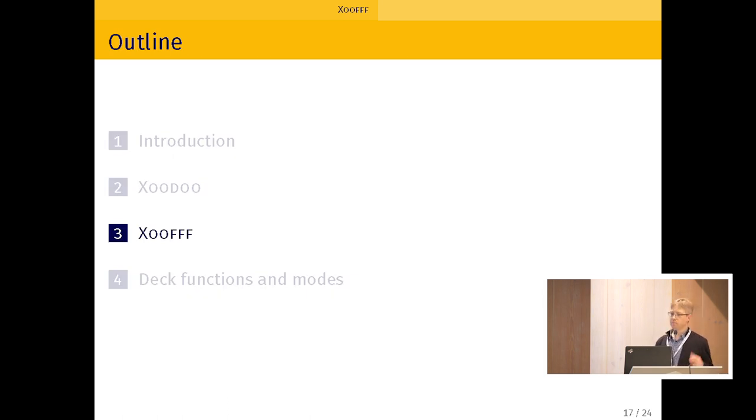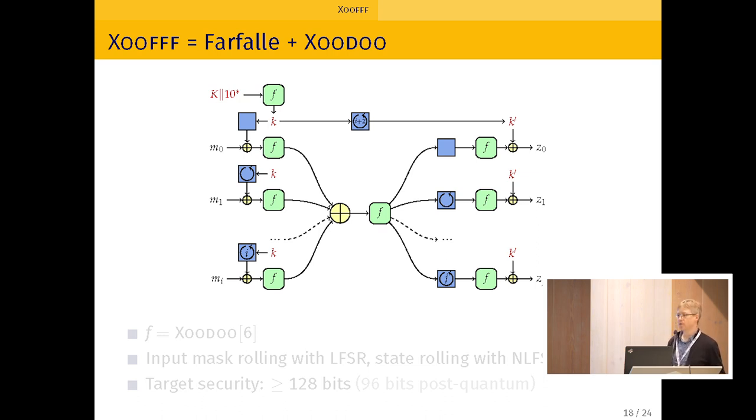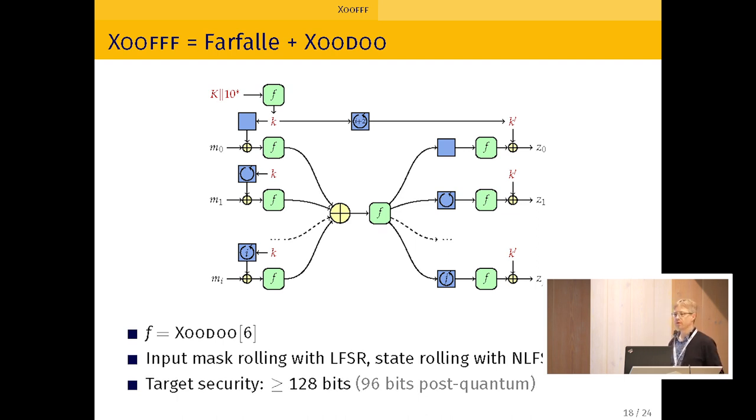So Zoof is just taking Farfalle, plugging in Zoodoo in those Fs, all the Fs. Zoodoo is a family of permutations parameterized by the number of rounds. So we use six rounds of Zoodoo in Zoof. We also need to define the rolling function. So on the compression side, the rolling function is linear, operating on a full state. And on the expansion side, it's non-linear and also operating on a full state. We make a security claim of 128 bits of security, both data and time. And we also make a post-quantum claim. If someone has access to a quantum computer, then the security is 2 to the 96. We don't make a claim for someone who would implement this on a quantum computer. That's a different story.